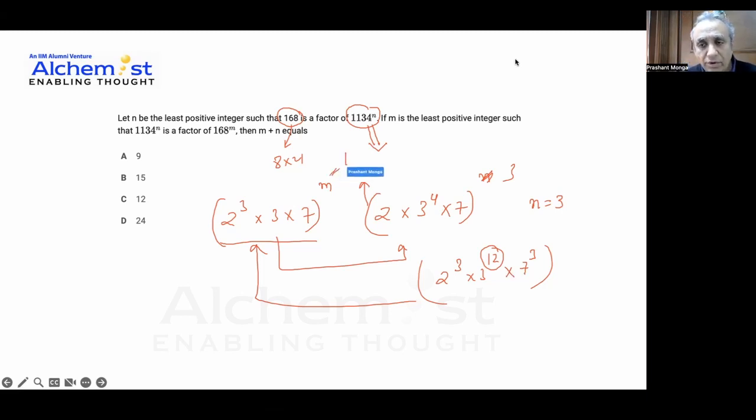So m should be equal to 12, and this gives me m plus n is equal to 12 plus 3, is equal to 15.